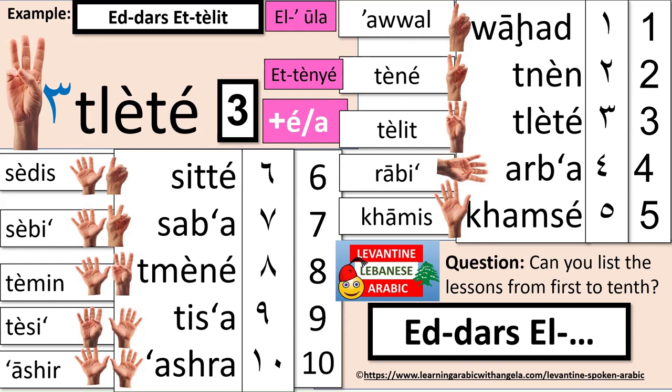Depending on the letter before the round ta, the sound produced can be an 'a' or an 'eh', but the rule can be broken, so with exposure you will learn which ones apply. So التانية, التالتة, الرابعة becomes الرابعة. الرحلة الرابعة، الرحلة الخامسة، الرحلة السادسة، الرحلة السابعة، الرحلة التامنية، الرحلة التاسعة، الرحلة العاشرة.